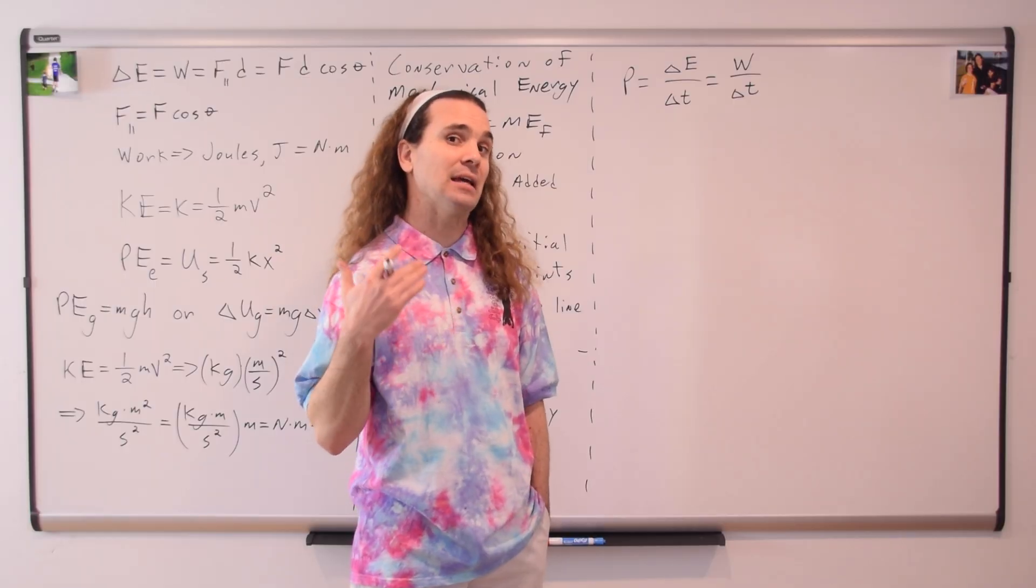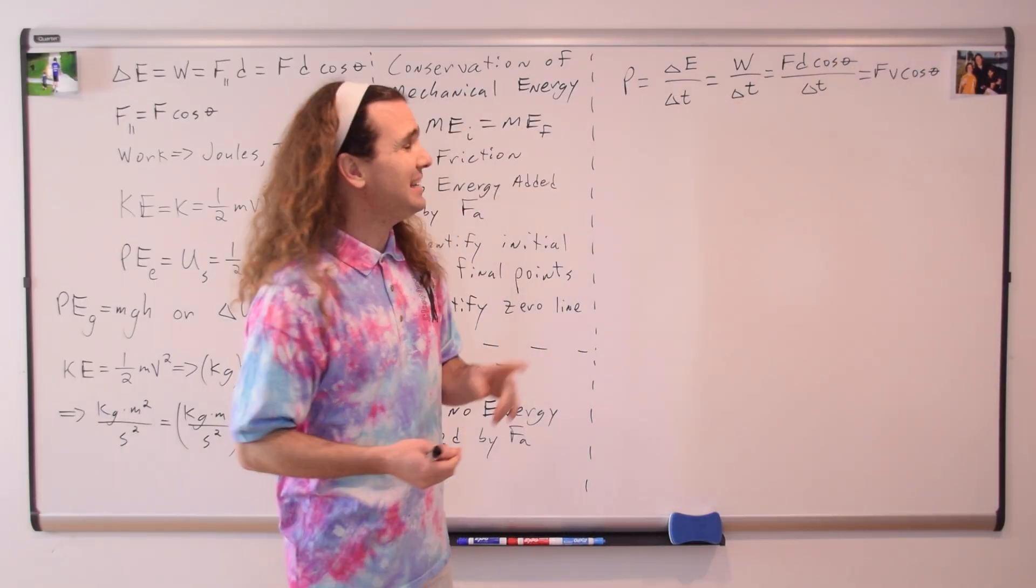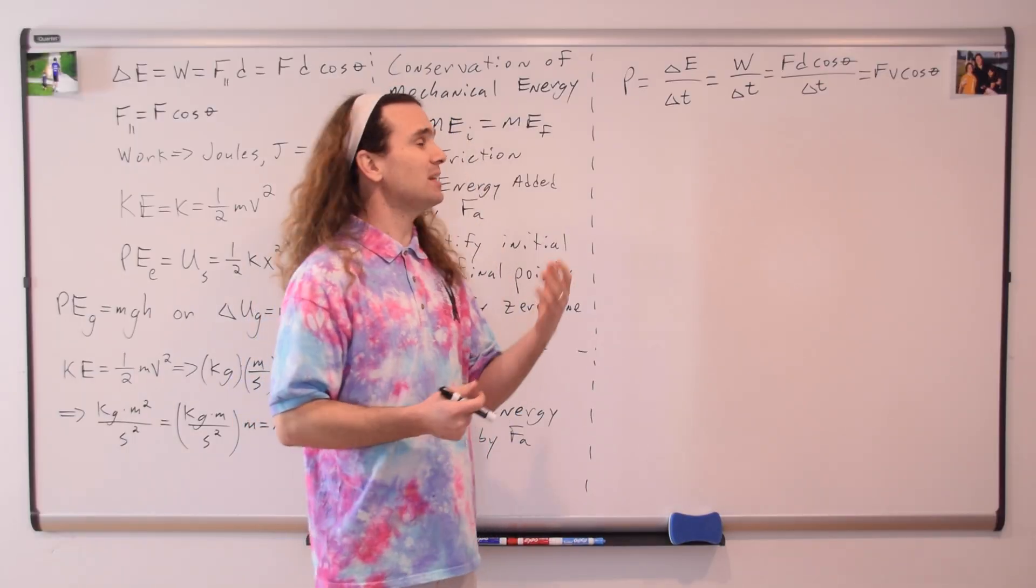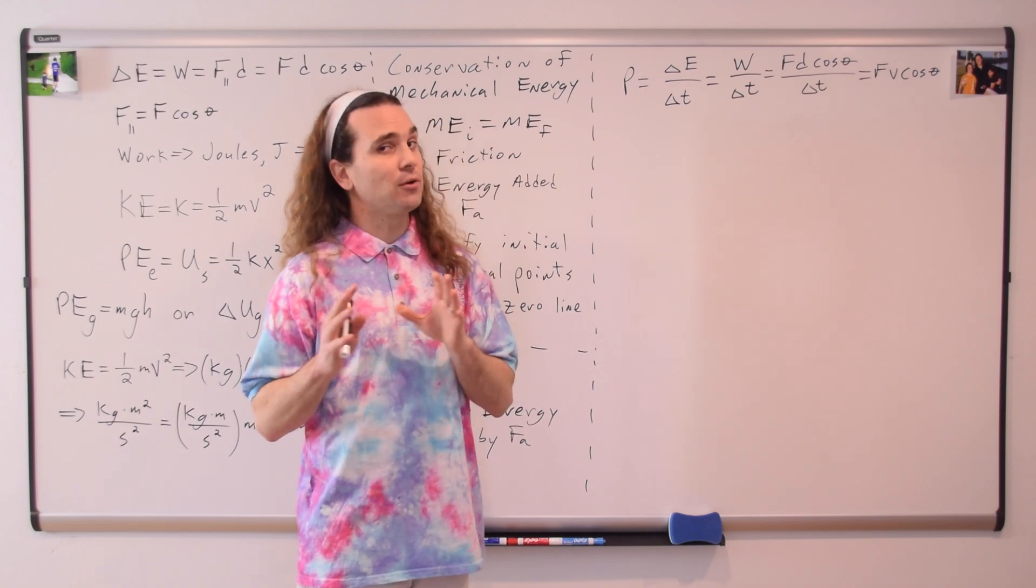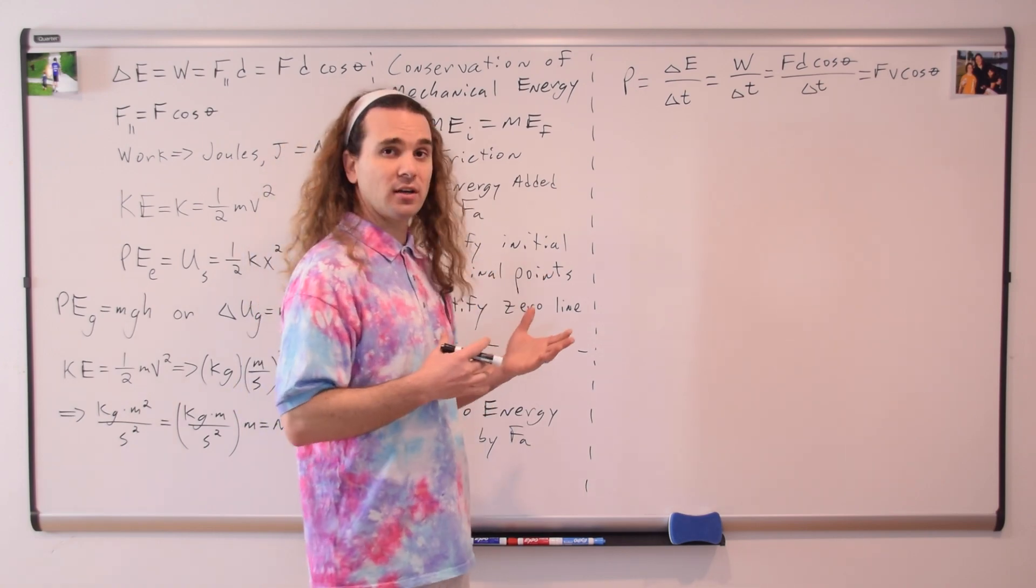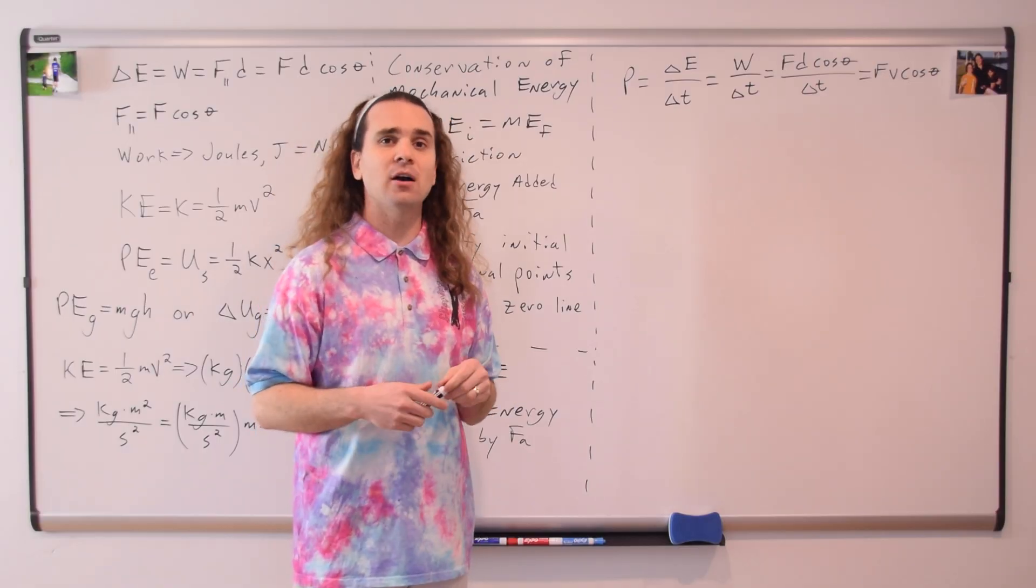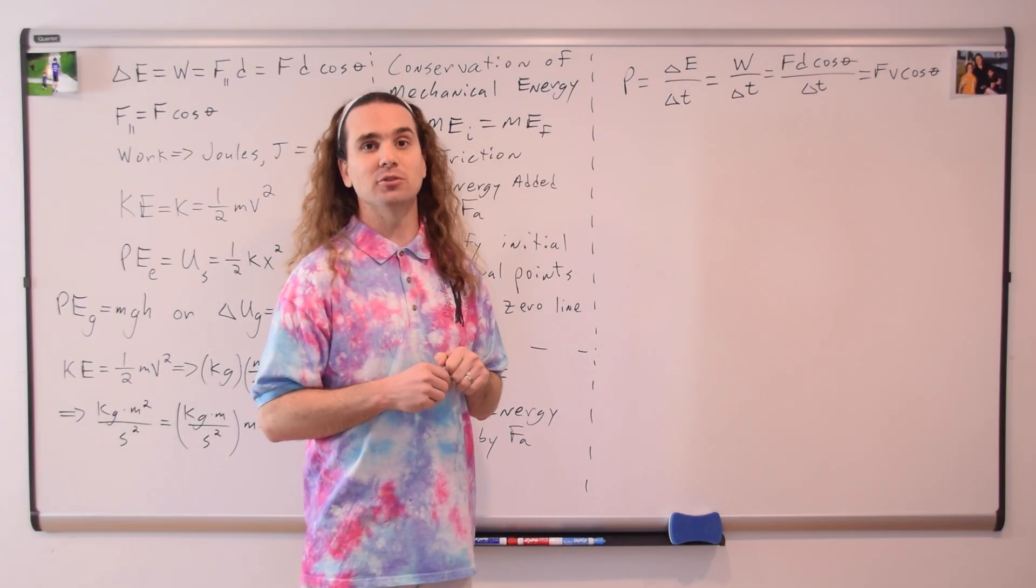And we can also substitute in the equation for work. And because d over delta t, or the displacement over change in time, is velocity, we now have an equation for power in terms of velocity. And remember, just like the work equation, you need to identify which force is doing the work, and theta is the angle between the direction of the force and the direction of the velocity of the object.